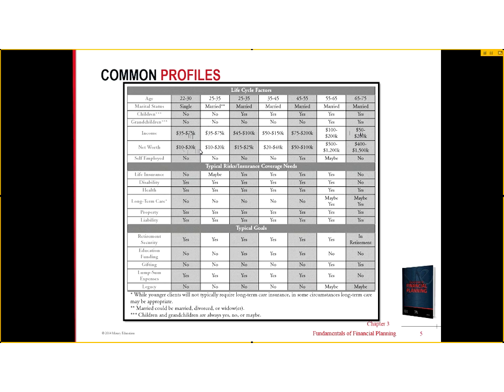People have different insurance needs and goals during different periods of the life cycle. However, we don't want to prejudge the situation. When someone has dependents relying on them economically, we certainly see greater insurance needs, but how clients want their dependents taken care of — and how a survivor may react — is different for every client. We also don't want to prejudge client goals.